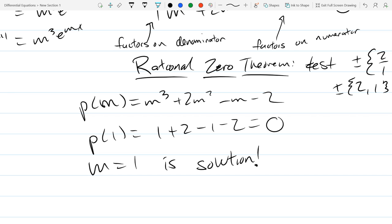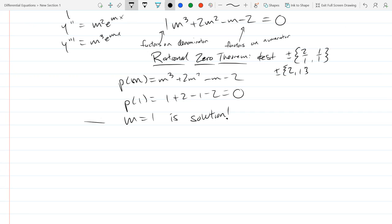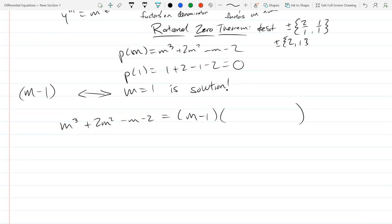So what do you do when you find a zero? We're not done. This is only one of the three. We're a third of the way there. So we need to find the other two. So we have a solution. So this corresponds to a factor. What factor does this correspond to? The one that, if you plug in that value, would make a zero. So this corresponds to m minus 1. How do I find that quadratic? Synthetic division or regular division.